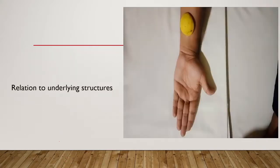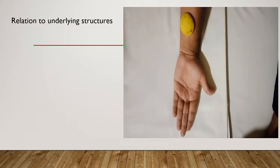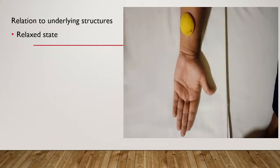Now we need to know about fixity to the underlying structures. Underlying structures means the tumor may be fixed to the muscle layers, nerves, arteries or vessels, or even to bones. To assess this, we first need to assess the swelling's fixity in the relaxed state — similar to how we examined mobility — and then we need to contract the muscle.